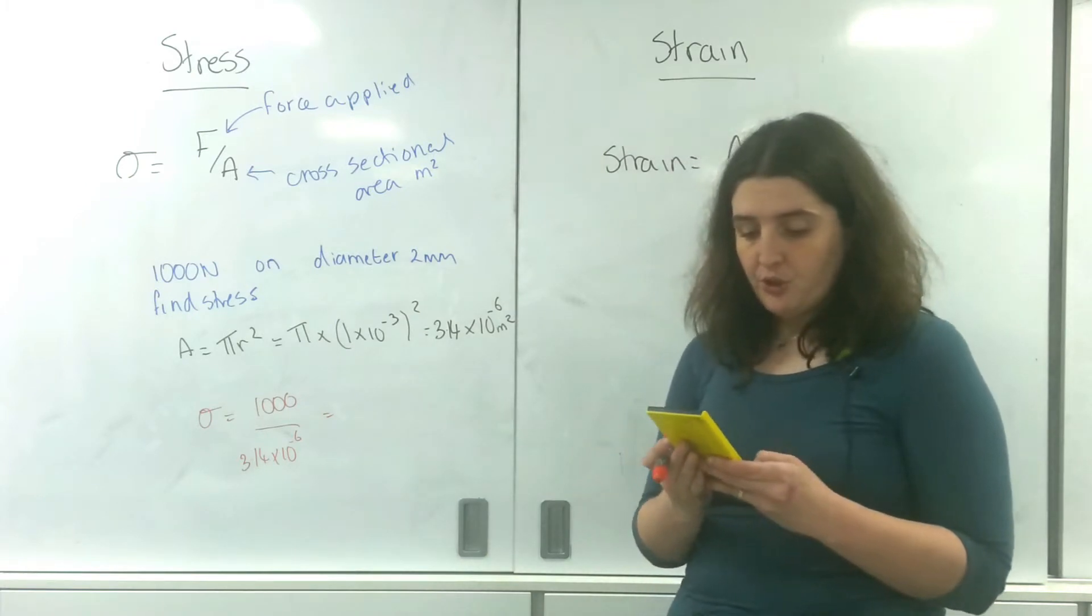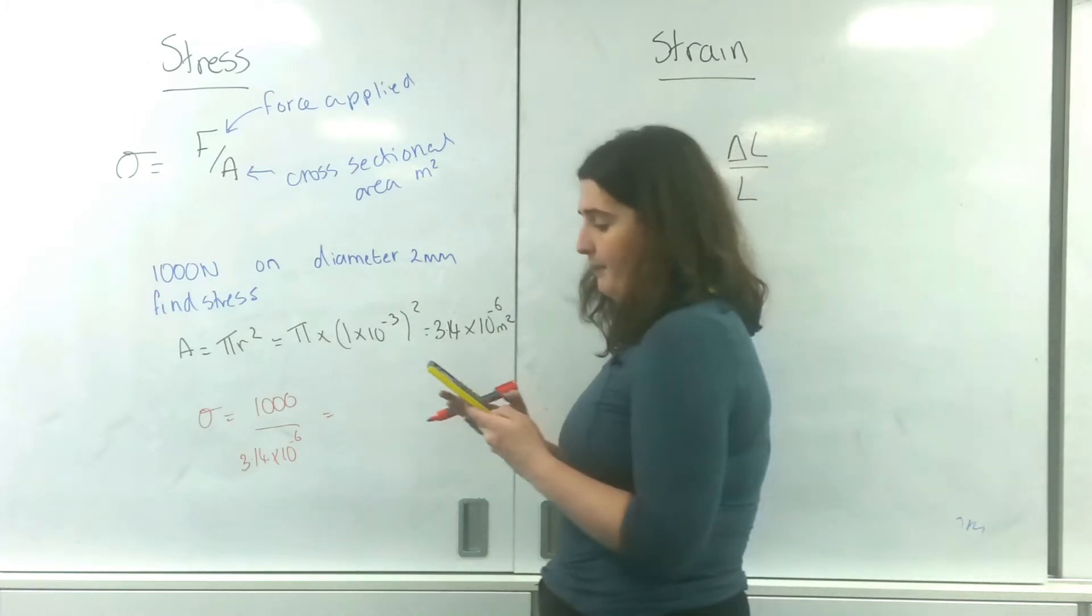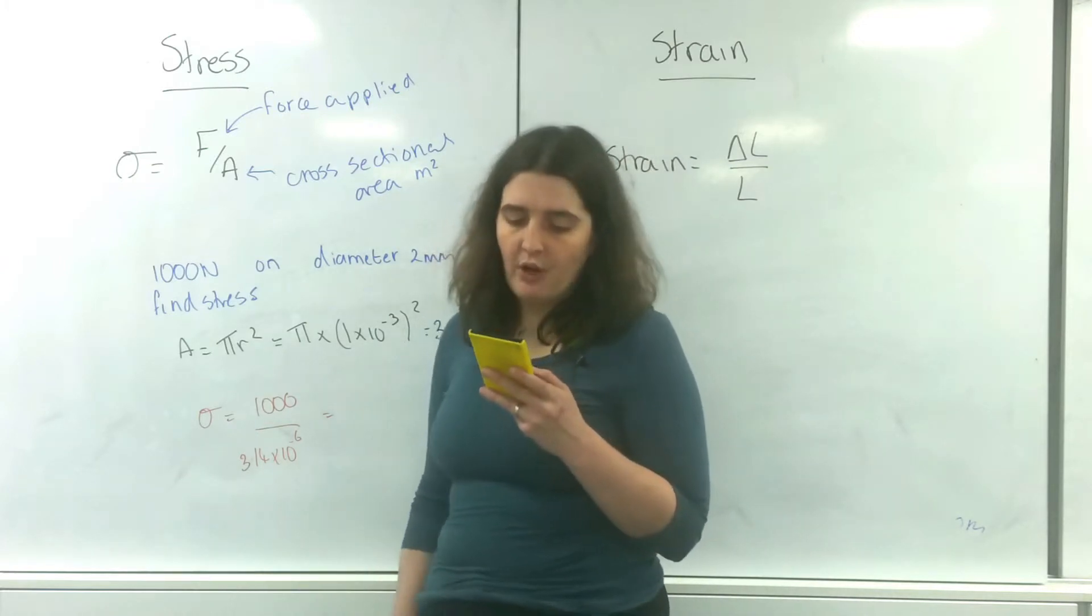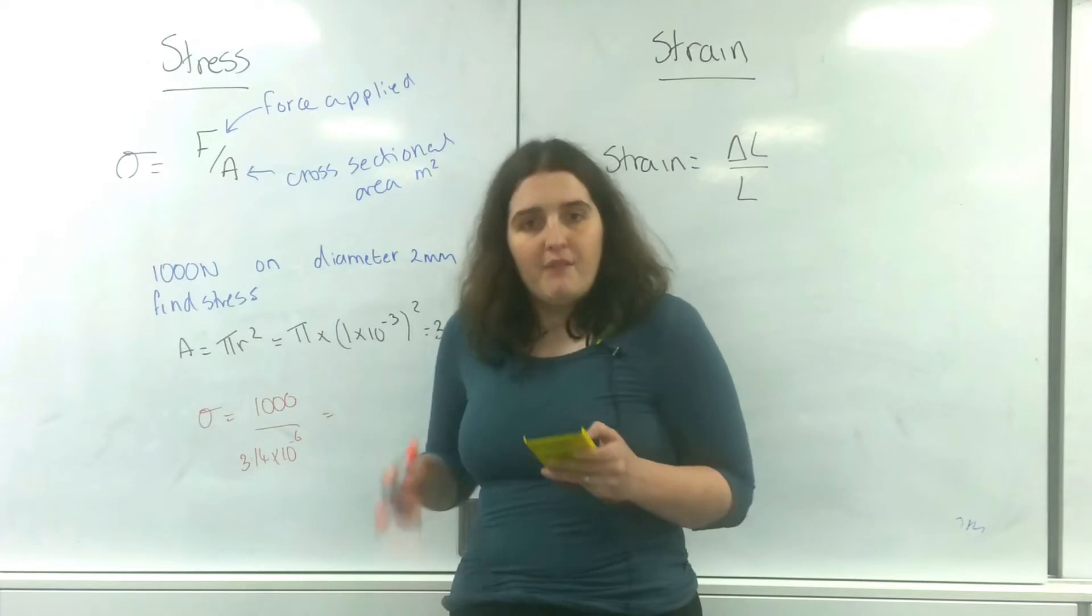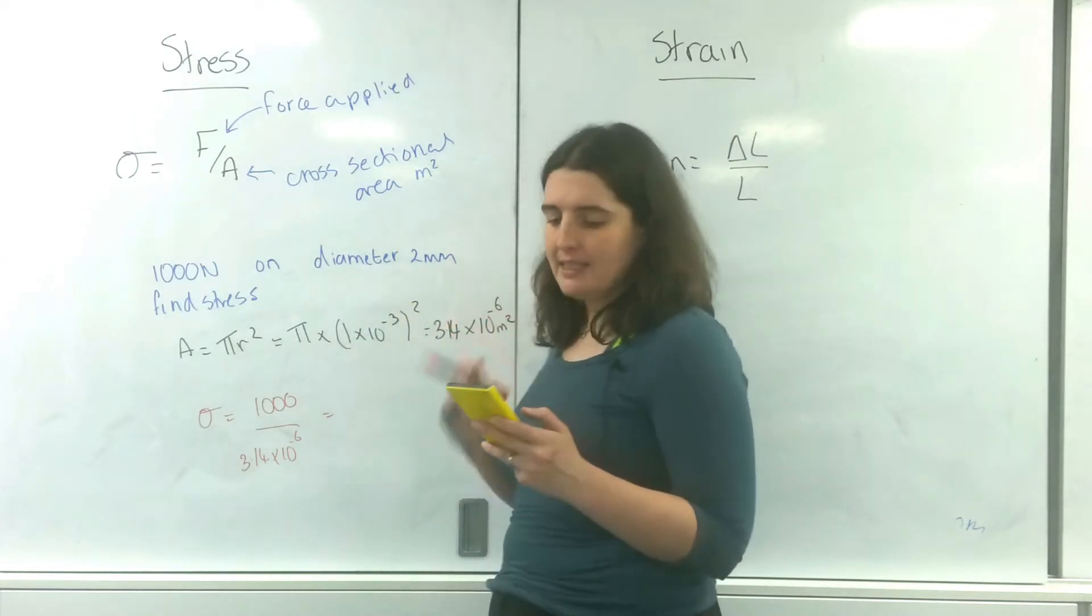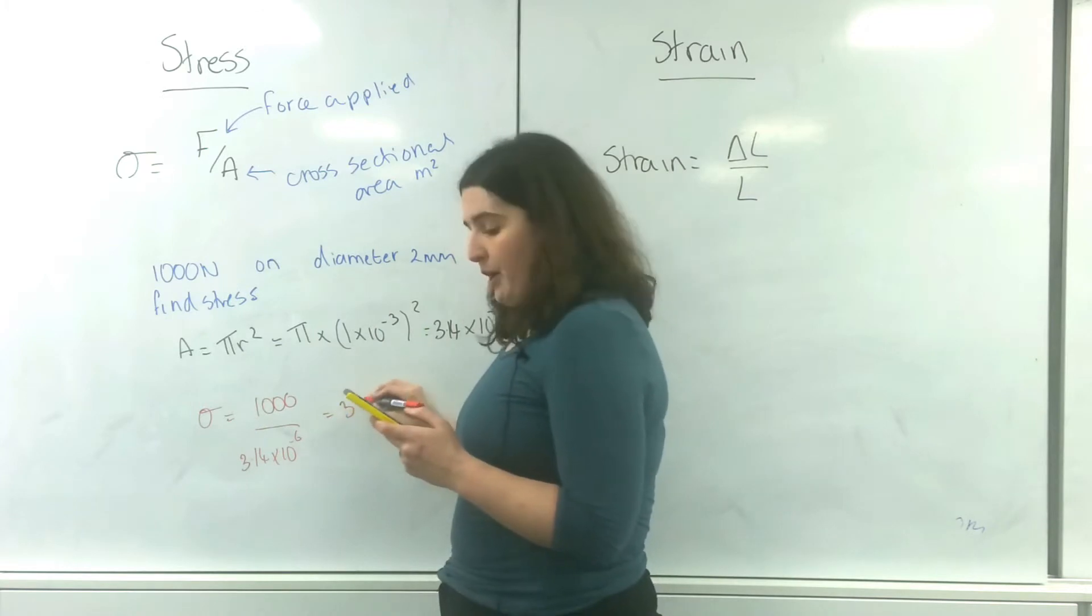So a thousand divided by that gives you a very long number: 3,183,098.86... If you press the ENG button on your calculator, you'll get a far more manageable number.